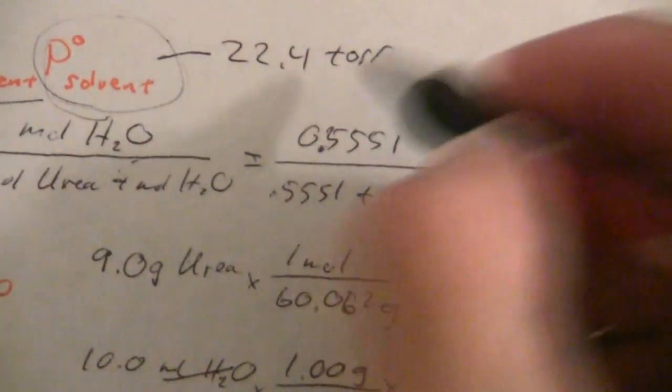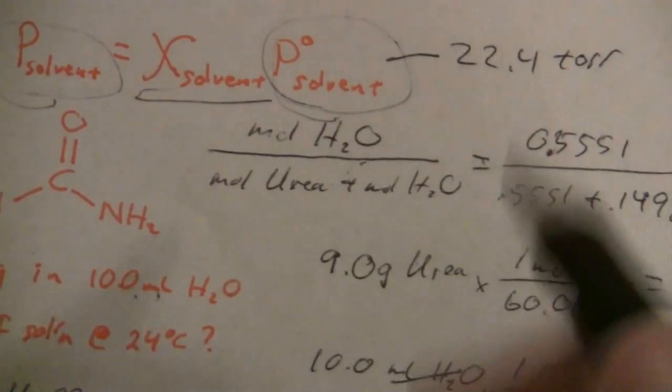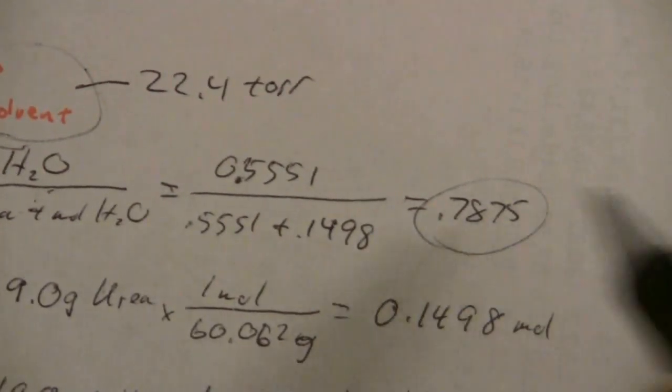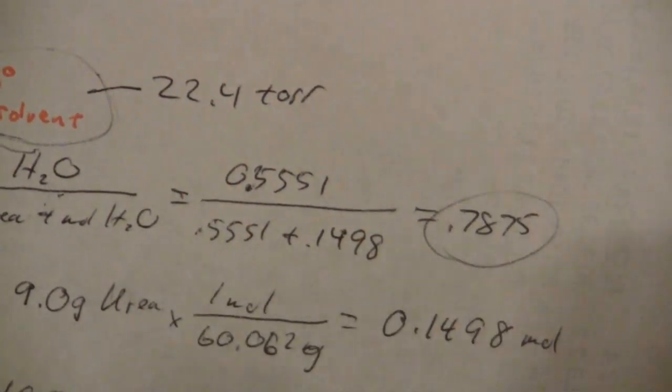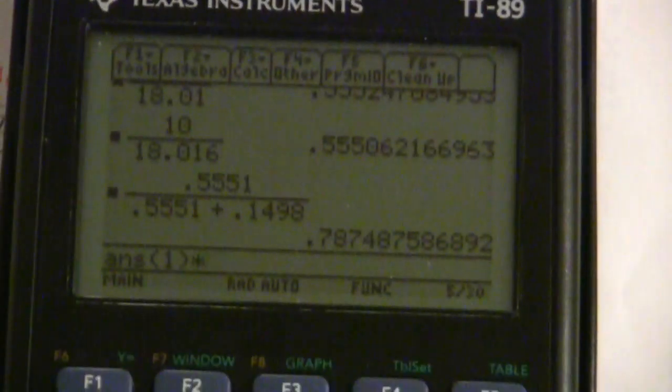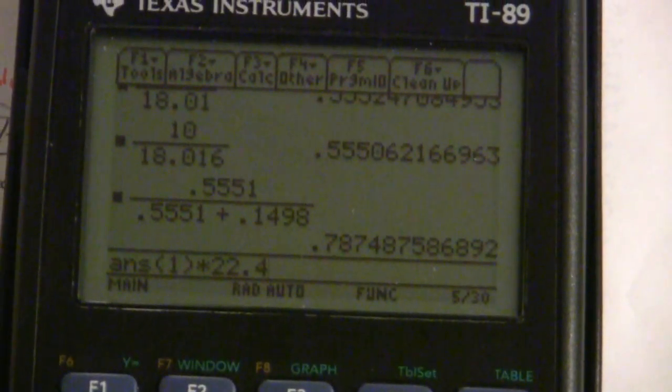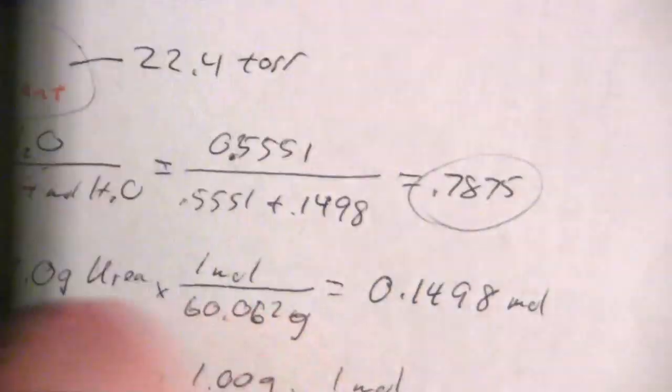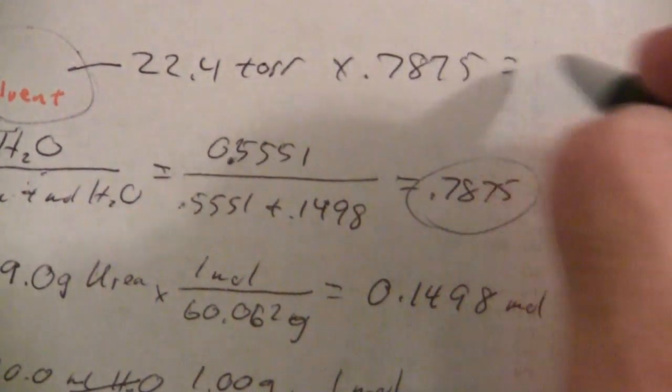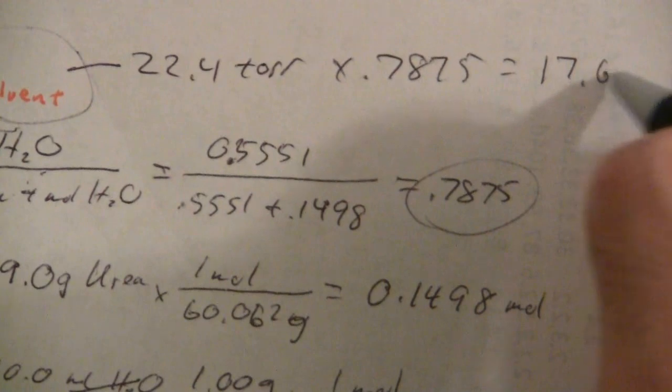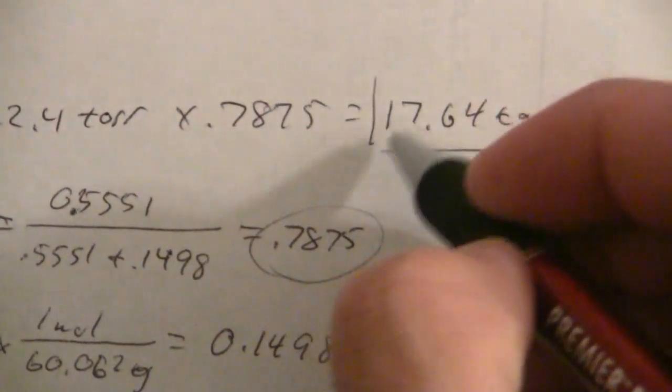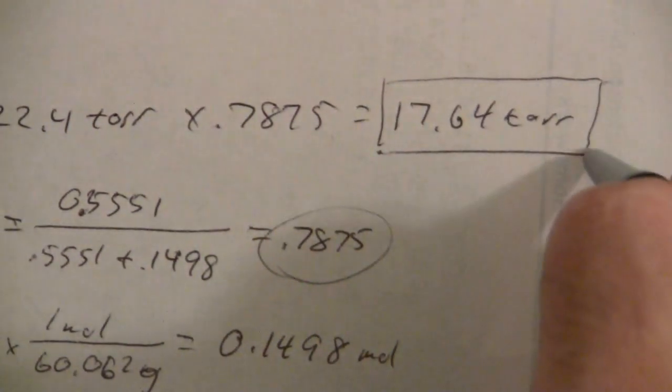22.4 torr is my vapor pressure here. Torr is the same as millimeters of mercury, but we can express the result in that same unit. So 22.4 times 0.7875, and what we end up with is 17.64 torr. That is the vapor pressure of the solvent over the solution.